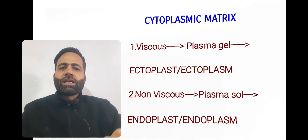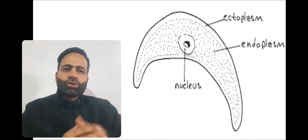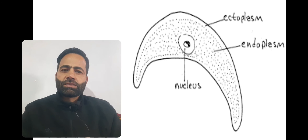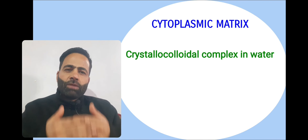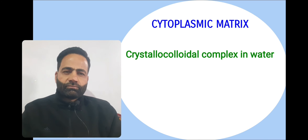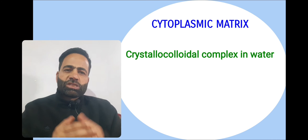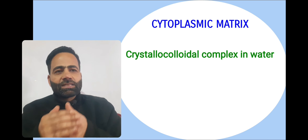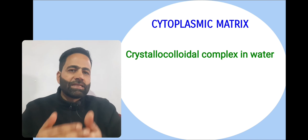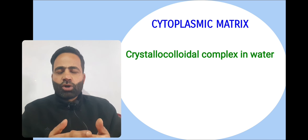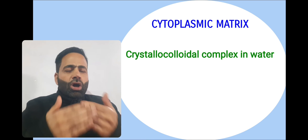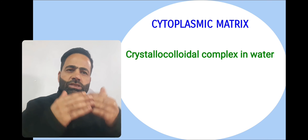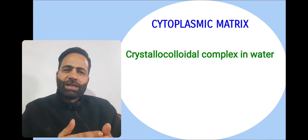There are various chemicals present in the cytoplasmic matrix. As you can see in the figure, the outer part is called ectoplasm while the internal part is called endoplasm. Some of these chemicals form a true solution with water — such as sugars and amino acids — while some chemicals such as proteins form a colloidal solution. So, the cytoplasmic matrix is a crystallocolloidal complex in water, with some chemicals in true solution and others in colloidal solution.